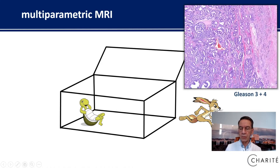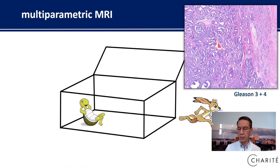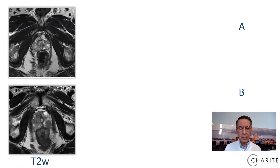Let us have a look at this histologic specimen. This is a prostate cancer, Gleason 3 — low-grade — and Gleason 4, higher-grade. When I ask you in which area of the prostate the diffusion is more restricted, everybody would say it is more restricted in the more aggressive tumor part. So let us have a check. These are two patients, patient A and patient B, both 65 years old with an elevated PSA, undergoing multiparametric MRI to check or rule out prostate cancer.